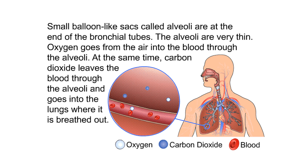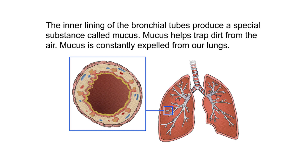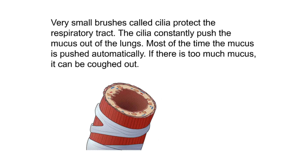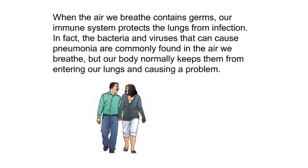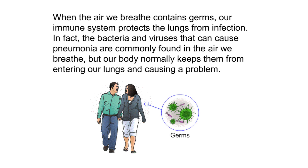The inner lining of the bronchial tubes produces a special substance called mucus. Mucus helps trap dirt from the air and is constantly expelled from our lungs. Very small brushes called cilia protect the respiratory tract by constantly pushing the mucus out of the lungs. If there is too much mucus, it can be coughed out. When the air we breathe contains germs, our immune system protects the lungs — the bacteria and viruses that can cause pneumonia are commonly found in the air, but our body normally keeps them from entering our lungs.